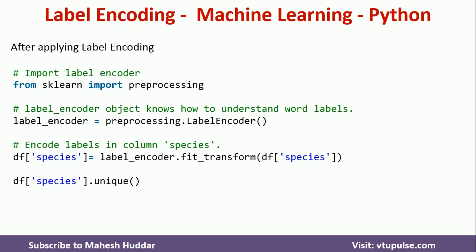To apply label encoding, we first import preprocessing from sklearn, then create an object called label_encoder using the LabelEncoder function. Once this object is created, we can use it to convert the labels into numeric values using label_encoder.fit_transform(df['species']). The labels will be converted — the first label gets value 0, the second gets 1, the third gets 2, and so on.